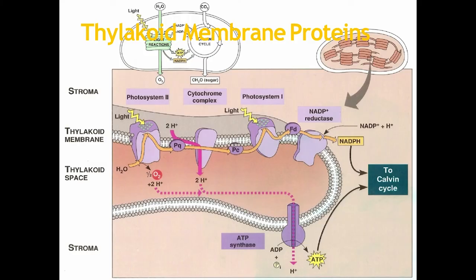This is the total image of thylakoid membrane proteins. Look the image carefully. In the thylakoid membrane, there is photosystem 2, then cytochrome complex, then photosystem 1, then NADP plus reductase, and then ATP synthase. So, there are five main components on the thylakoid membrane. They together perform the electron transfer mechanism.